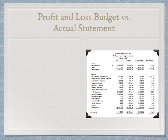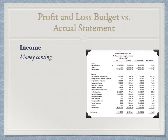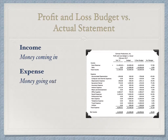Now we're going to look at the profit and loss budget versus the actual statement. This will show us a company's projected income and expenses versus its actual — in other words, it compares what was expected as far as money coming in and money going out, and what money actually came in and went out.